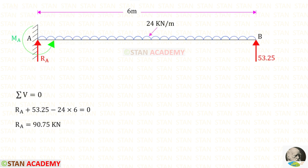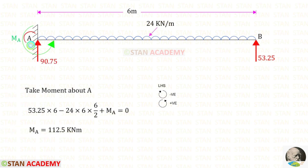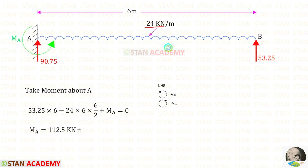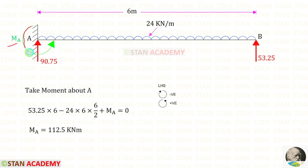By applying the rule ΣV = 0, we can find Ra. Now let us take the moment about A and find Ma. Rb is acting in the anticlockwise direction so it will be positive, and the distance is 6. The uniformly distributed load is acting in the clockwise direction so it will be negative. We assumed Ma acting anticlockwise, which gives a positive value — so our assumption is correct. Ma is acting in the anticlockwise direction.